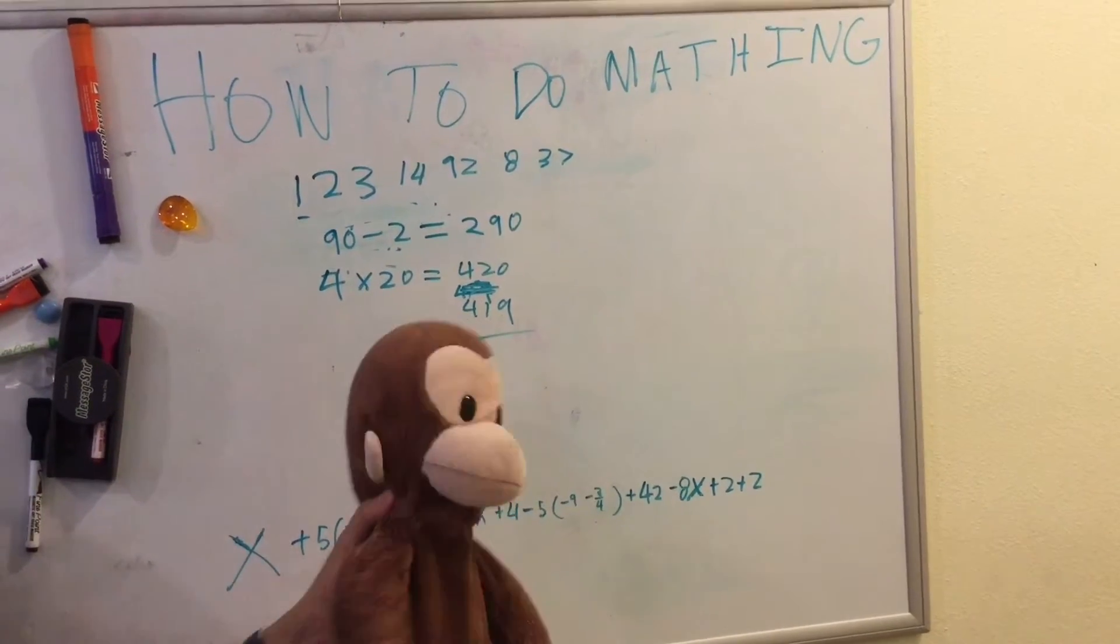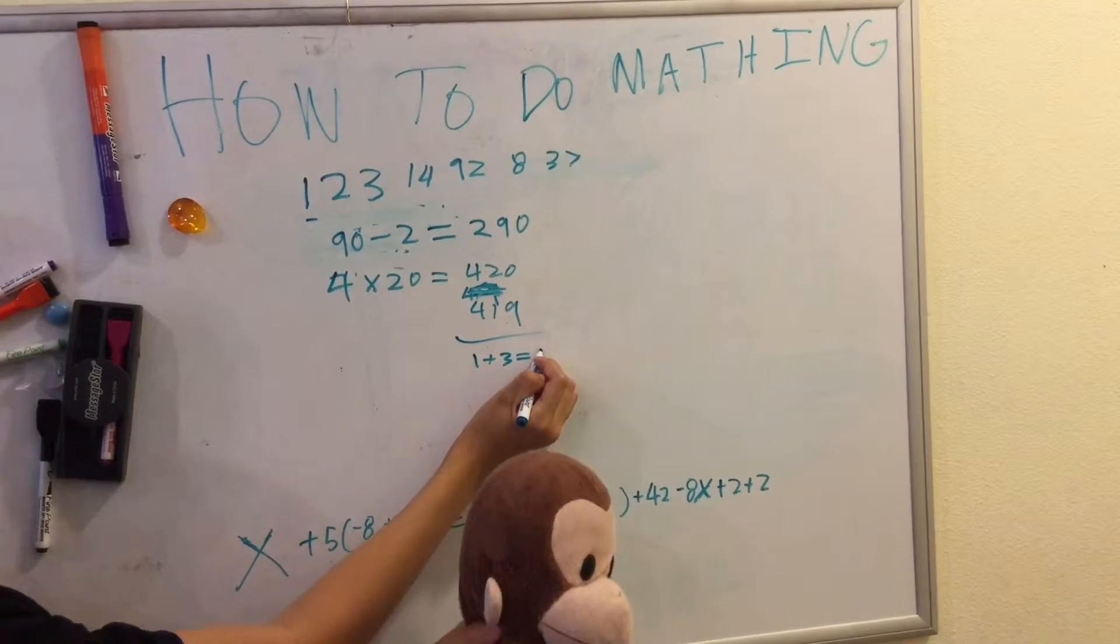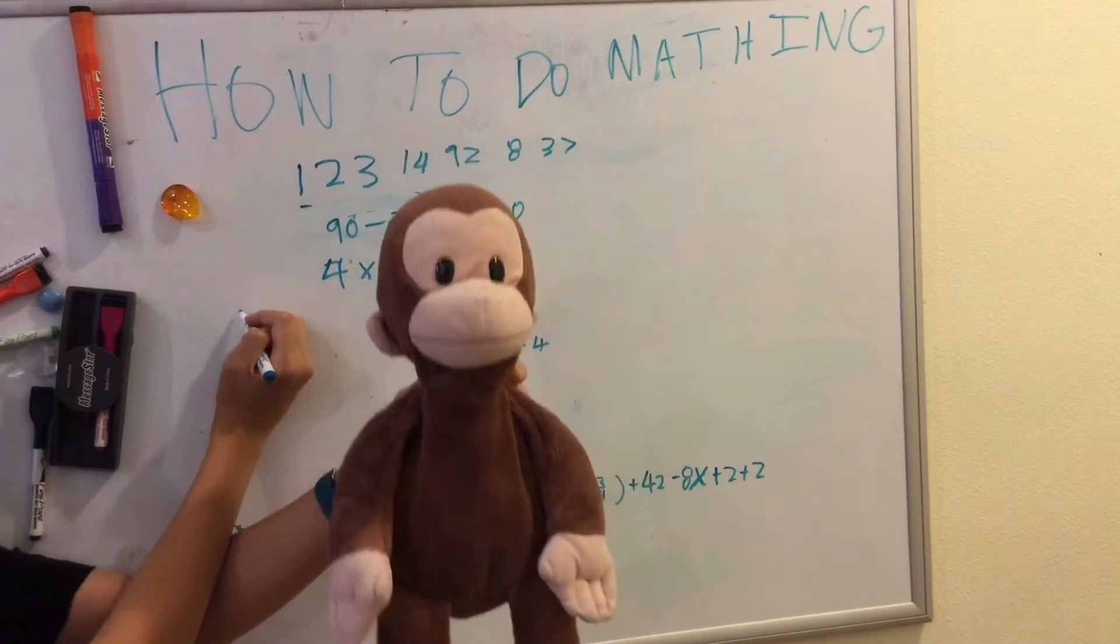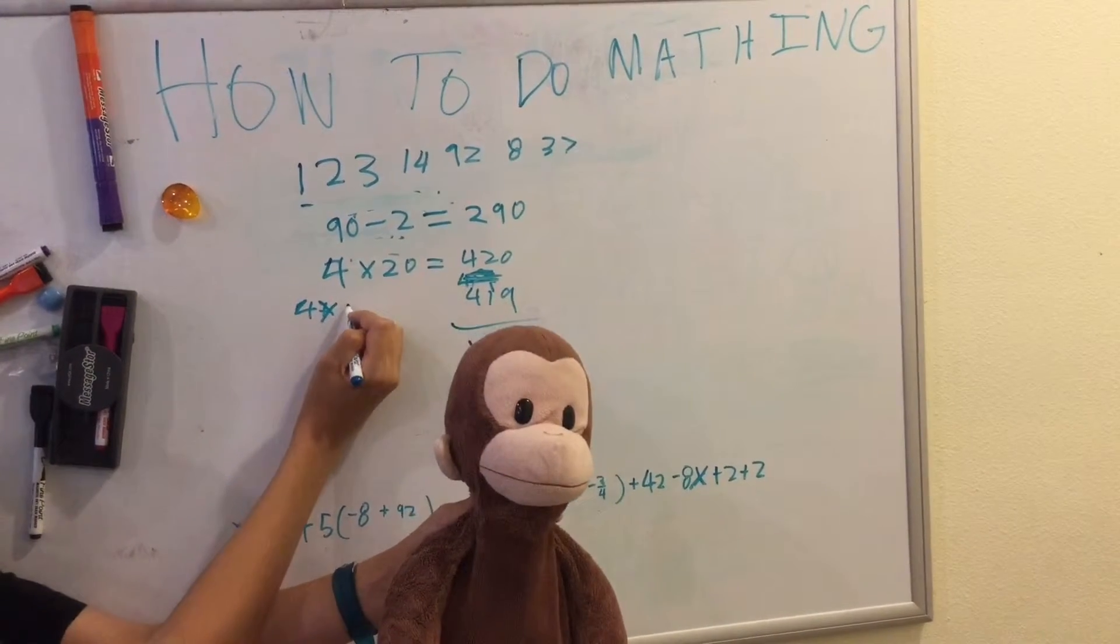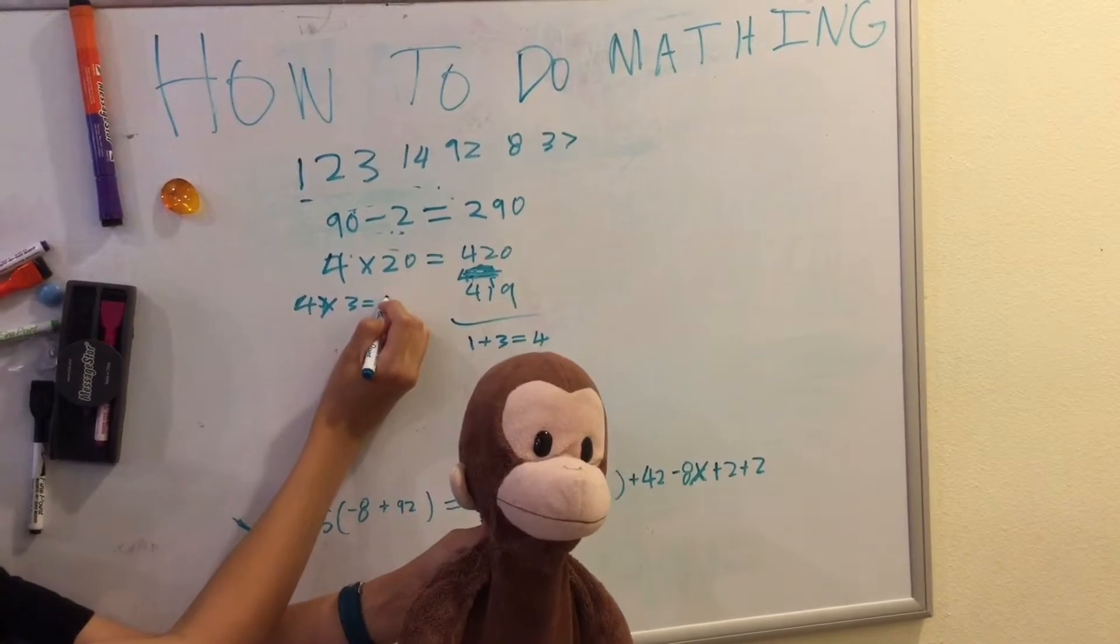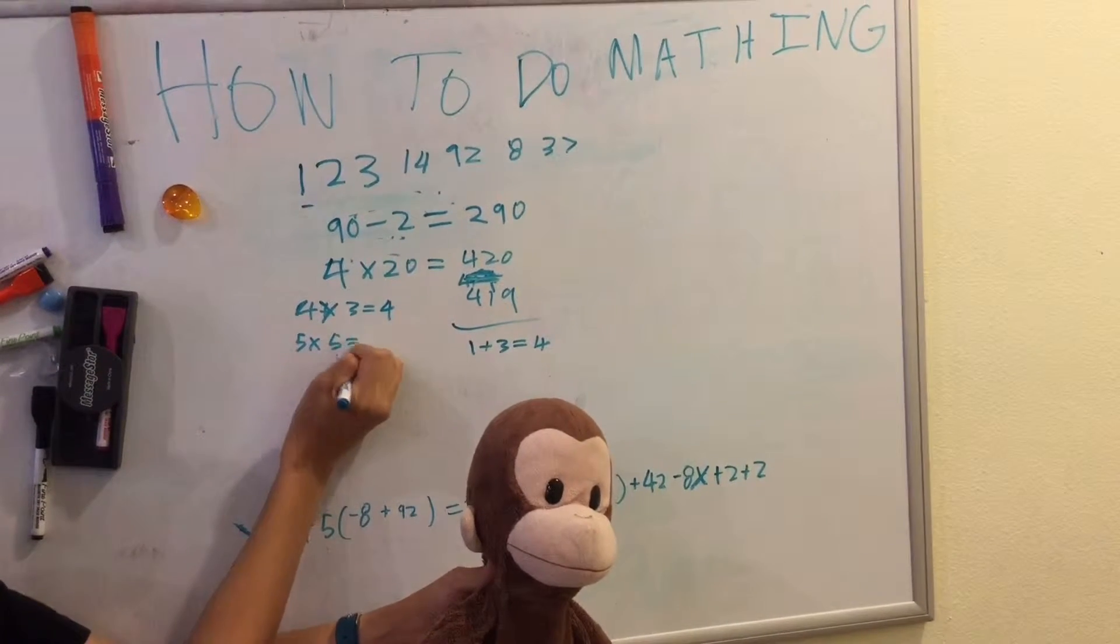remember the exception earlier. One plus three equals four. This is the same with every multiplication thing. So, four times three equals four. And five times five equals four.